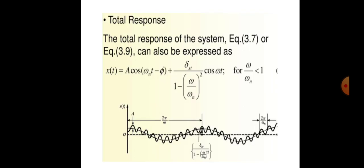The total response is: x(t) = A cos(ωₙt − φ) + [δₛt / (1 − (ω/ωₙ)²)] · cos(ωt), for the condition where omega upon omega-n is less than one. These are the frequency conditions we are considering.